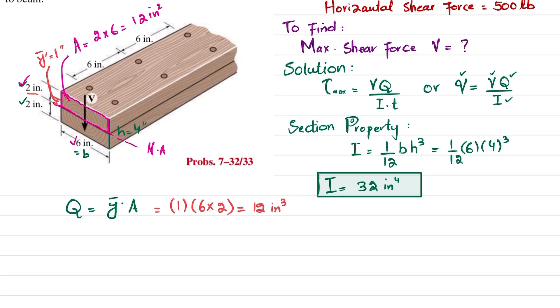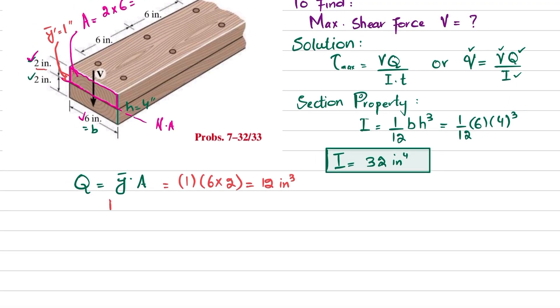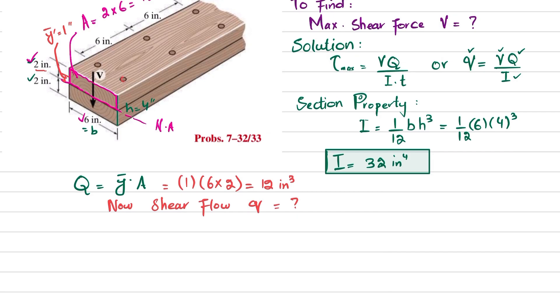Now we will move further. We will find shear flow, which is equal to small q. You can see these are the two rows of nails that carry 500 pounds horizontal shear force.